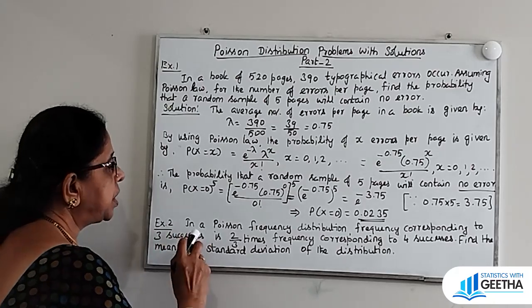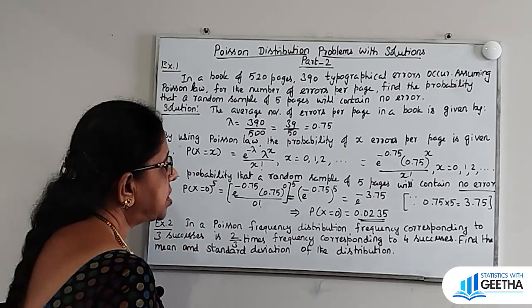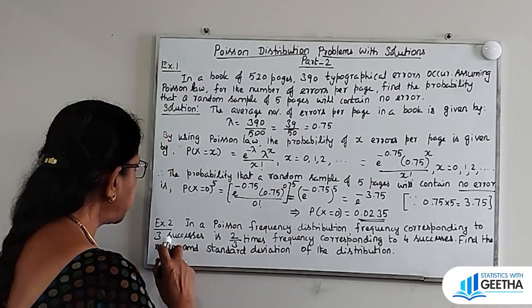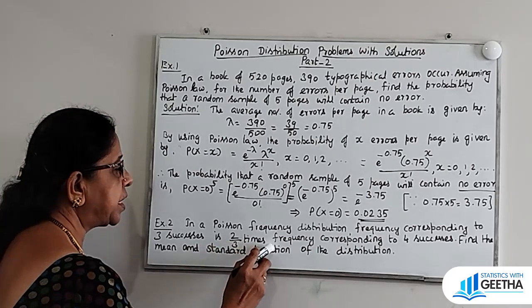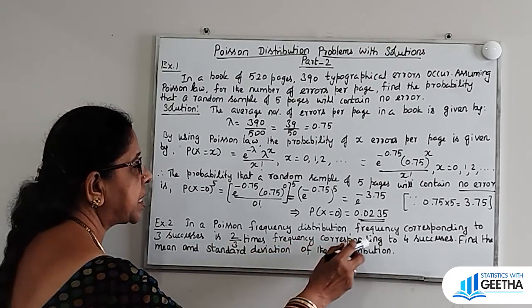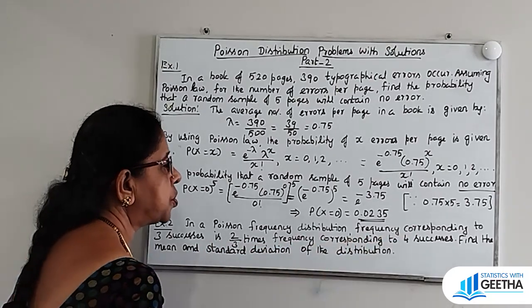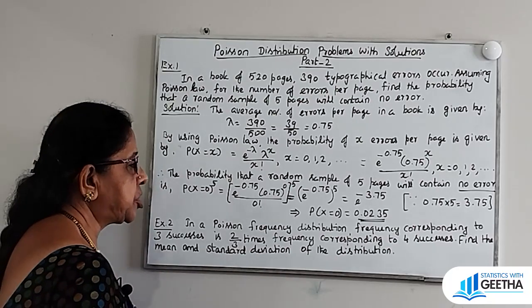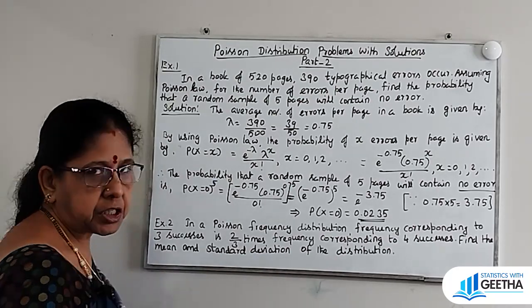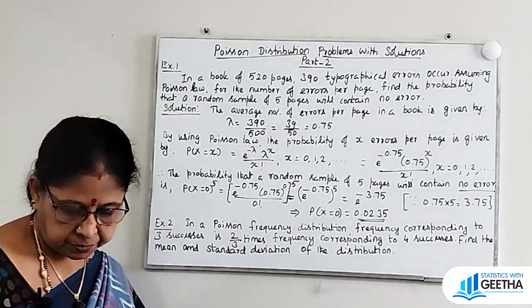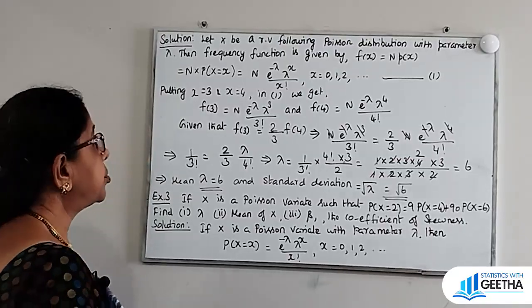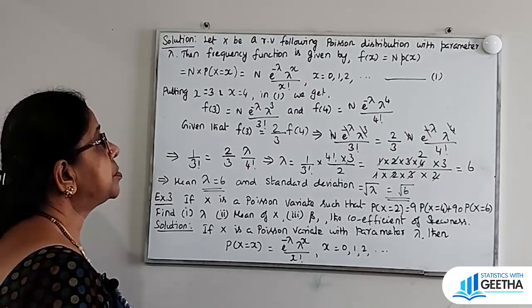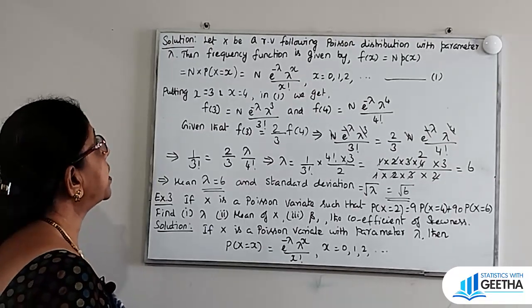Exercise number 2. In a Poisson frequency distribution, the frequency corresponding to 3 successes is 2/3 times the frequency corresponding to 4 successes. Find the mean and standard deviation of the distribution. Let x be a random variable following Poisson distribution with parameter lambda.